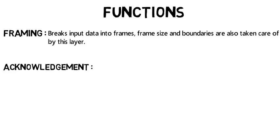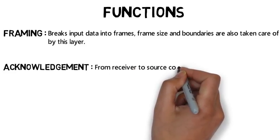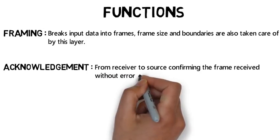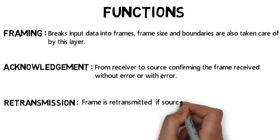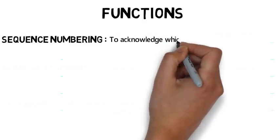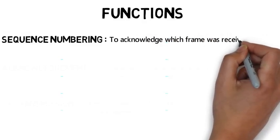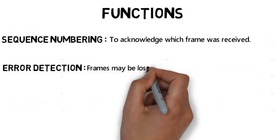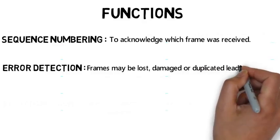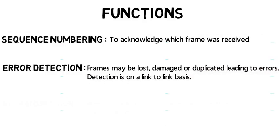Acknowledgement is sent from receiver to source confirming whether the frame was received without error or with error. Retransmission: a frame is retransmitted if the source fails to receive acknowledgement. Sequence numbering: its purpose is to acknowledge which frames were received. Error detection: frames may be lost, damaged, or duplicated, leading to errors — detection is on a link-to-link basis. Flow control is necessary for a fast transmitter to keep pace with a slower one.